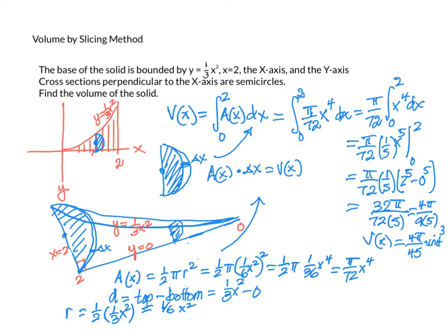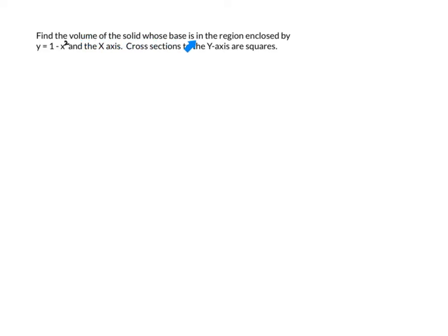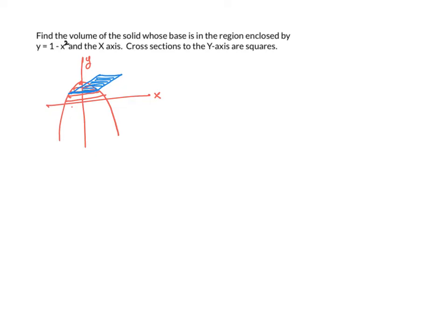Let's go to the next example. We are looking for the volume of the solid whose base is the region enclosed by y equals 1 minus x squared. The region is a downward-opening parabola, bounded by the x-axis. Cross-sections perpendicular to the y-axis are squares. Here's the cross-section perpendicular to the y-axis — it is a square coming out vertically, cutting through perpendicular to the y-axis.